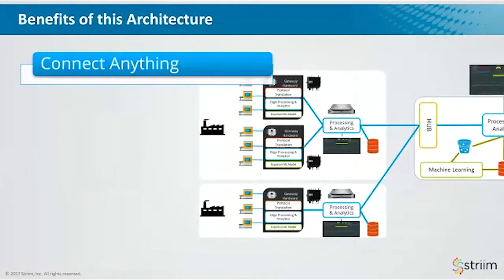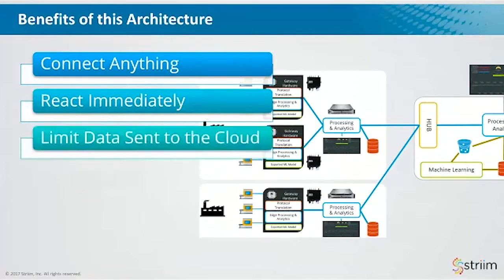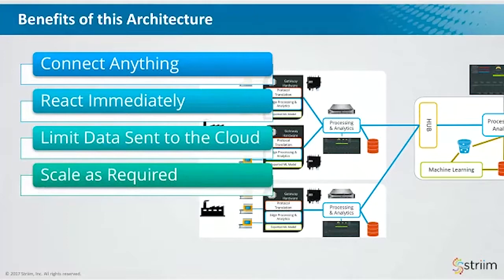With this architecture you can connect anything — internet-enabled IoT devices using MQTT, AMQP, TCP, HTTP, plus protocol translation gateways with modules for BACnet, Modbus, OPC UA, and other protocols for legacy devices. It allows you to react immediately because you're doing edge processing and analytics, and limits data sent to the cloud by converting data to information before it ever makes it there. It scales as required because you're moving a lot of processing to edge devices, which inherently scale by adding more of them, and adding more on-site processing and analytics as necessary. You can also control everything centrally through a cloud interface.